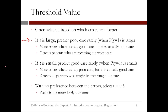This approach would detect the patients receiving the worst care and prioritize them for intervention. On the other hand, if the threshold value t is small, we predict poor care frequently and we predict good care rarely. This means we will make more errors where we say poor care, but it's actually good care. This approach would detect all patients who might be receiving poor care. Some decision makers often have a preference for one type of error over the other, which should influence the threshold value they pick. If there's no preference between the errors, the right threshold to select is t equals 0.5, since it just predicts the most likely outcome.